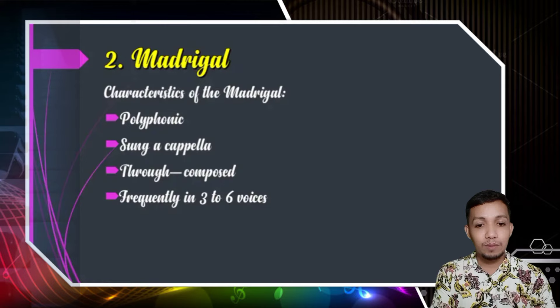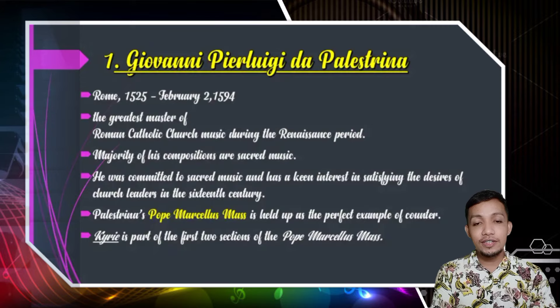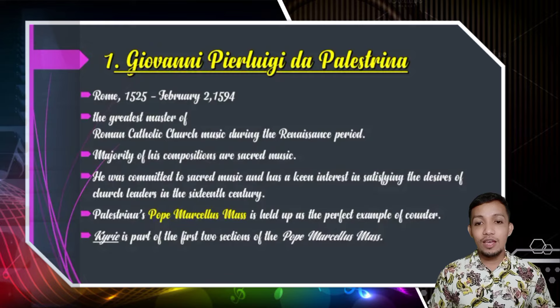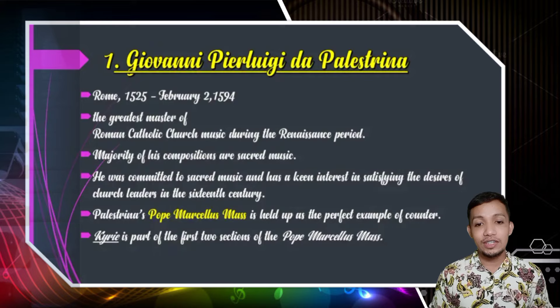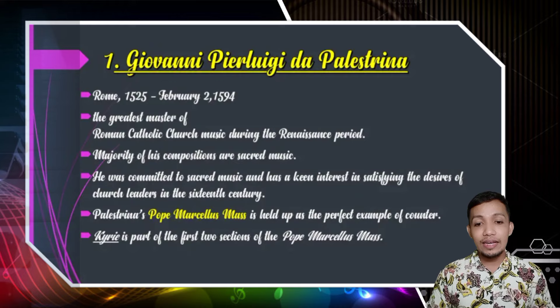Here are the famous composers of the Renaissance period. First one was Giovanni Pierluigi da Palestrina. He was born in Rome in the year 1525 and died in the year 1594. He was considered the greatest master of Roman Catholic Church music during the Renaissance period. Majority of his compositions are sacred music, and he was committed to sacred music with a keen interest in satisfying the desires of church leaders in the 16th century. Palestrina's Pope Marcellus Mass is held up as the perfect example of Counter-Reformation style.